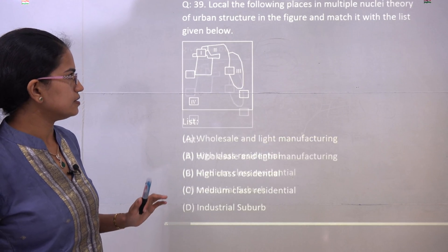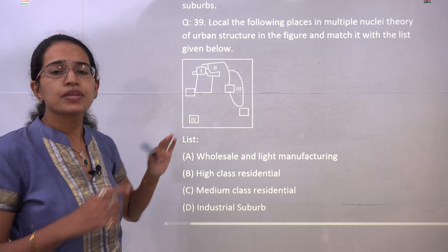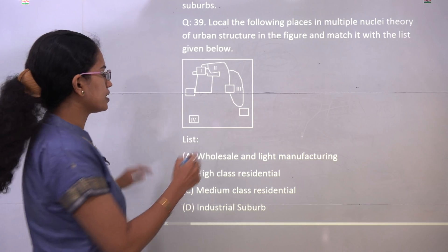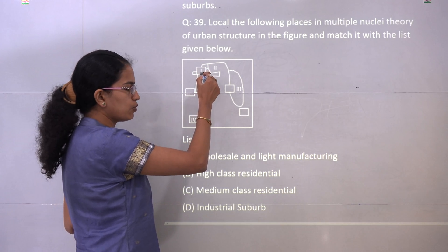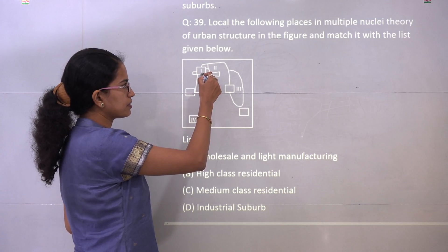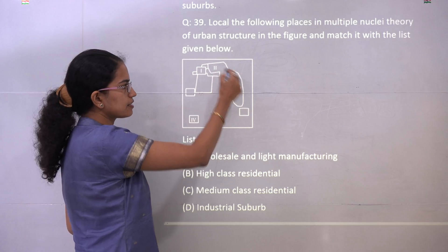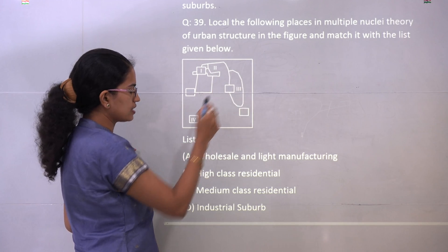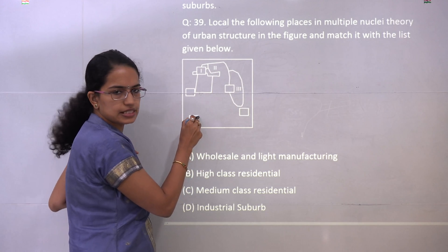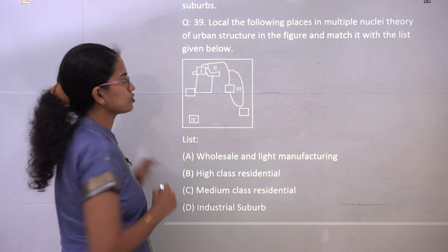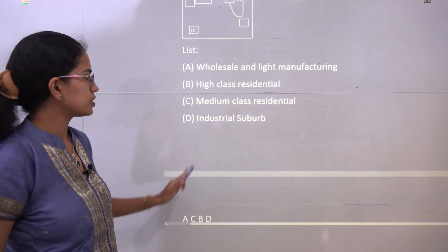Under the multiple nuclei theory, option 1 is the wholesale and light manufacturing areas, option 2 is the middle-income group, option 3 is the high residential class, and option 4 is the industrial suburb. Those are the correct matches for 1, 2, 3, and 4.